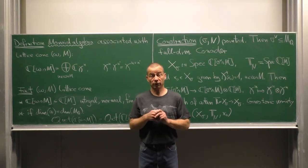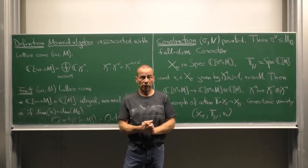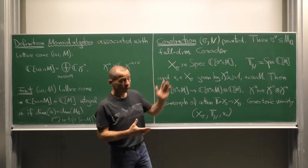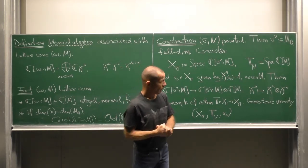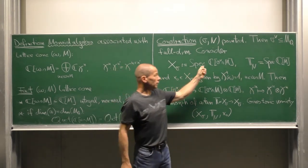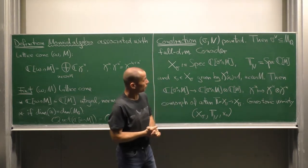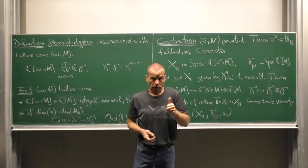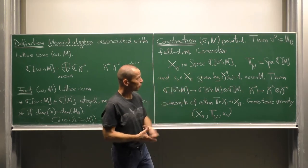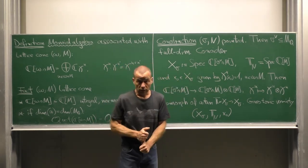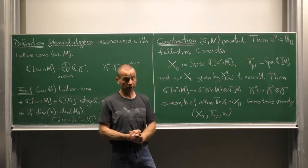We are ready for the central construction of this clip. It starts with a pointed lattice cone sigma in N. Pointed implies that the dual cone is of full dimension. Now, we know that the monoid algebra of this lattice cone is integral, normal and finitely generated. So, if we pass to the spectrum, we obtain an irreducible normal variety, which we denote by X_sigma.